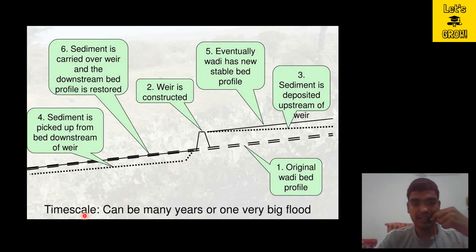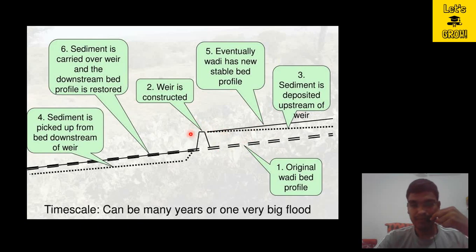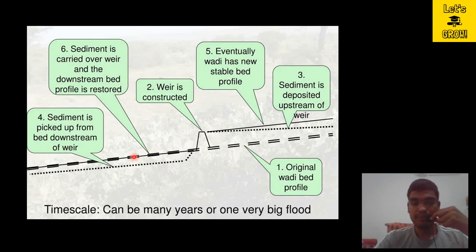The time scale for this can be many years or one very big flood. Whenever a flood occurs, it carries a large amount of sediment with it. Whenever a large amount of sediment is coming in the river, whatever water is overflowing through the weir will carry a large amount of sediment, and these sediments are deposited in the downstream, which helps to restore the downstream bed profile of the river.